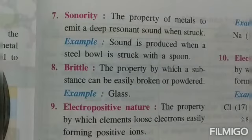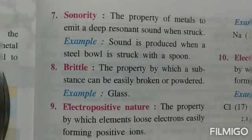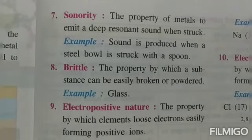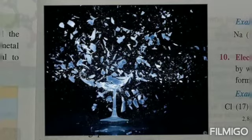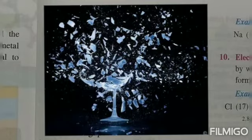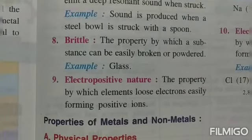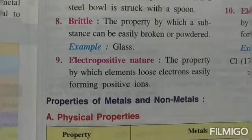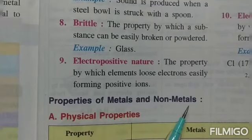Sonority is the property of producing a sound when a metal is struck — sound is produced when a steel bowl is struck with a spoon. When you try the same thing with a non-metal, this sound will not be produced. Brittle is the property by which a substance can easily be broken into a powdered state — like glass, which shatters and breaks into pieces when dropped. The ninth property is electropositive nature: the property by which an element loses electrons to form positive ions.